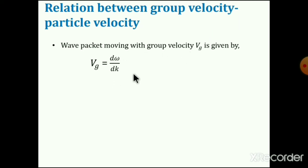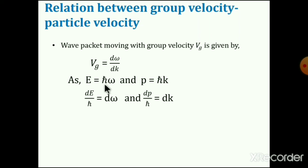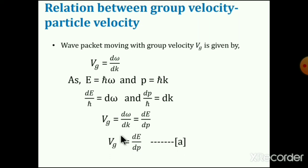In the limiting case as δk tends to zero, the group velocity equals dω/dk. This represents the expression for group velocity. So we now have both relations: phase velocity vp = ω/k, and group velocity vg = dω/dk. It is then possible to find the relation between group velocity and particle velocity.